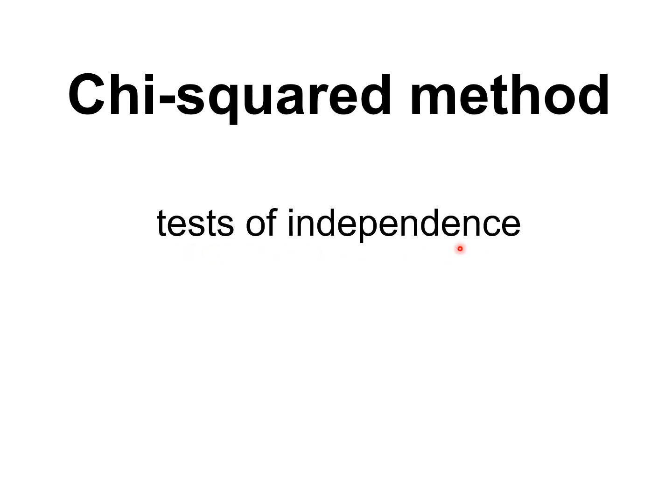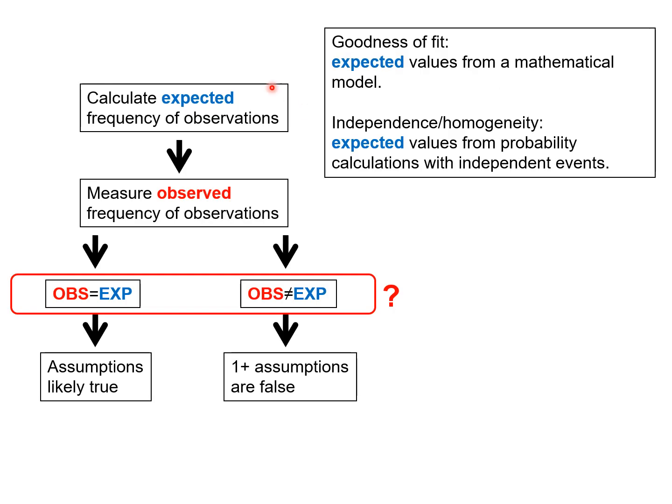In this video we'll be looking at chi-squared tests of independence. Remember this is our diagram of what the general idea is for a chi-squared test. The technique is allowing us to make this decision here. And independence and homogeneity tests, the expected values are going to come from probability calculations where events are assumed to be independent, that will be the null hypothesis. And then if that null hypothesis is rejected, then our conclusion would be that the events are not independent.